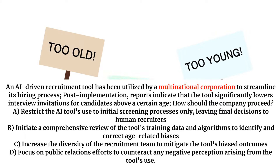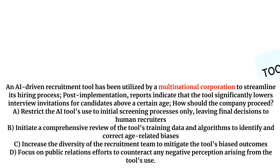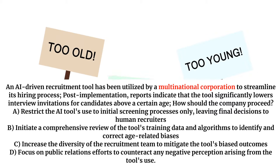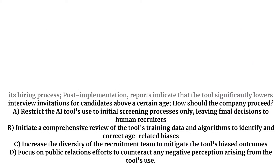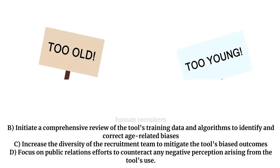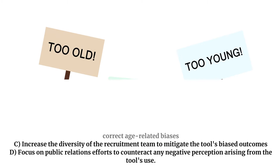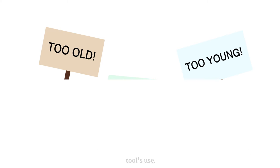A. Restrict the AI tool to initial screening processes only, leaving final decisions to human recruiters. B. Initiate a comprehensive review of the tool's training data and algorithms to identify and correct age-related biases. C. Increase the diversity of the recruitment team to mitigate the tool's biased outcomes. D. Focus on public relations efforts to counteract any negative perception arising from the tool's use.